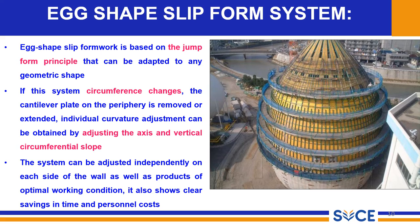The next type is the x-shape slip form system. The x-shape slip form is based on the jump form principle that can be adapted to any geometry. If you have any differential circumference, this method is adopted. The cantilever plates on the periphery are removed. Extended and individual curvature adjustment can be obtained by adjusting the axis and the vertical circumference slope. This system can be adjusted independently on either side of the wall, providing optimal working conditions, and shows clear saving in time and personal cost.